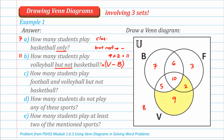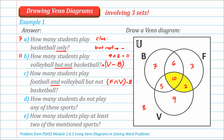Letter C: How many students play football and volleyball but not basketball? 'And' means intersection, and 'but not' means set difference. So this is (F intersect V) minus B. The intersection of F and V includes two regions. But not basketball means we remove those who also play basketball — remove 10. We only have the region with 2 left. Therefore, the answer is 2.